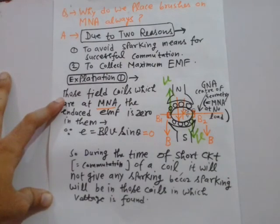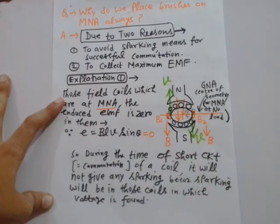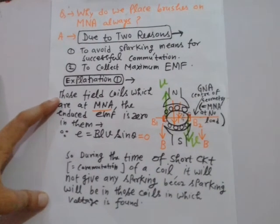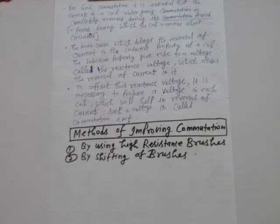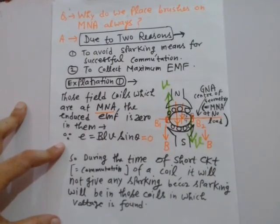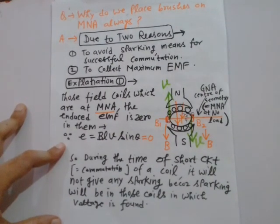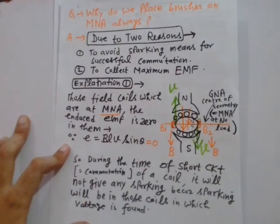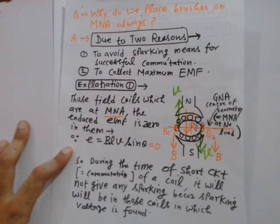Brushes must always be placed on the magnetically neutral axis. This point was already explained in an earlier lecture covering why brushes are placed on the MNA — placing them there ensures there is no sparking. The next topic to be discussed is armature reaction.